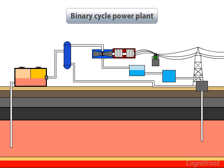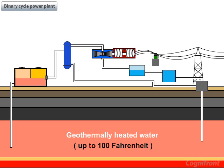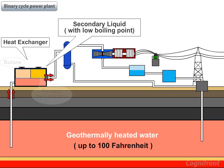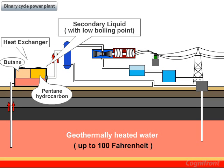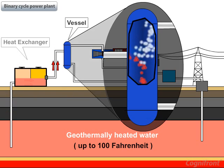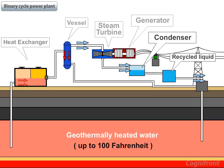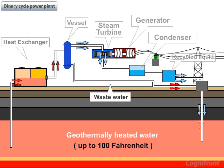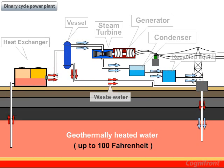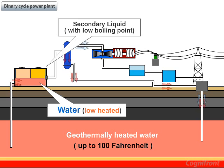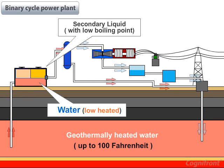The last type is the binary cycle power plant. This is used when the geothermal resource is at a lower temperature of up to 100 degrees Fahrenheit. Here, the hot water is passed to a heat exchanger combined with a secondary liquid with a lower boiling point, such as butane and pentane hydrocarbon. A mixture vapor is generated and it runs the turbine. The mixture vapor is cooled by a condenser and the liquid is recycled. Wastewater is injected back into the earth. As this power plant requires two liquids — water and a secondary liquid — it is called a binary cycle power plant.